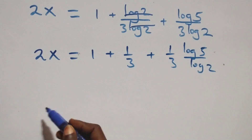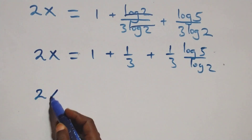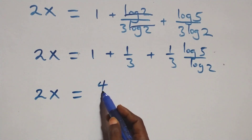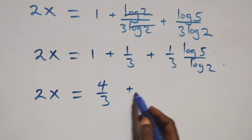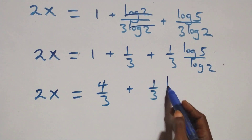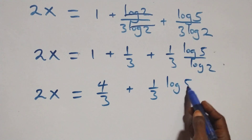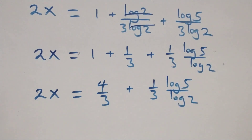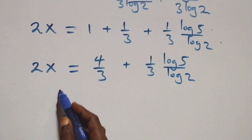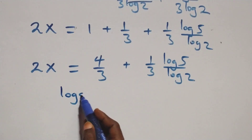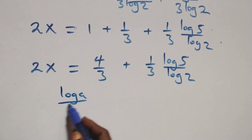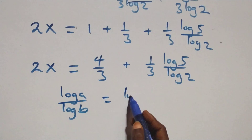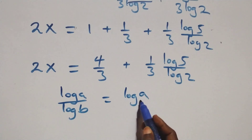Then we can write 1 plus 1 over 3 as 4 over 3, so 2x equals 4 over 3 plus 1 over 3 times log 5 over log 2. We also apply the change-of-base formula: log A over log B is the same thing as log A to base B.